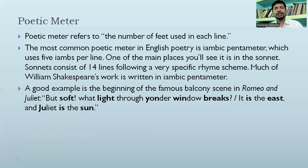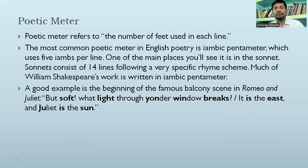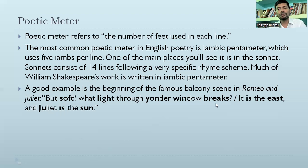Poetic meter refers to the number of feet used in each line. The most common poetic foot in English poetry is iambic pentameter, which uses five iambs per line. One of the main places you will see it is in the sonnet. A sonnet consists of 14 lines following a specific rhyme scheme. Much of Shakespeare's work is written in iambic pentameter. A good example is the famous balcony scene in Romeo and Juliet: 'But soft, what light through yonder window breaks. It is the east, and Juliet is the sun.'